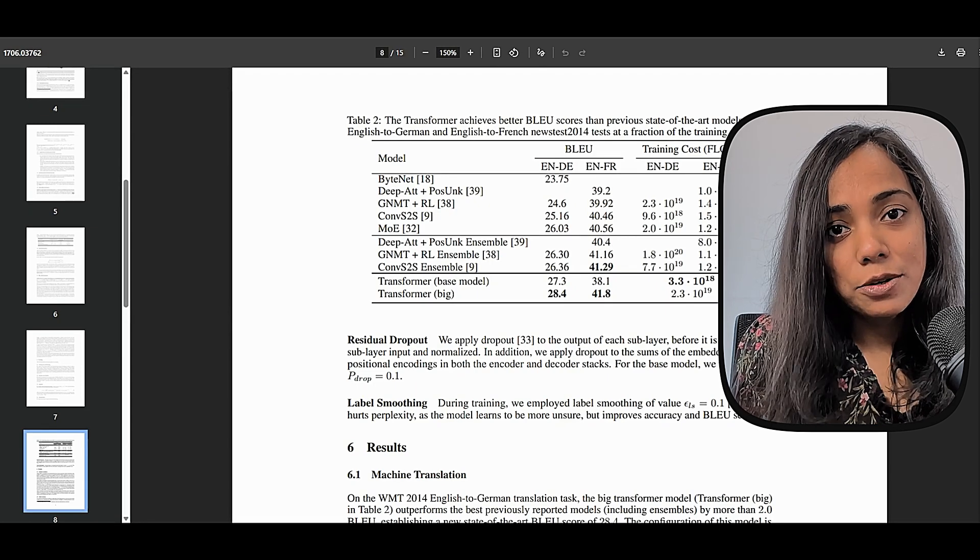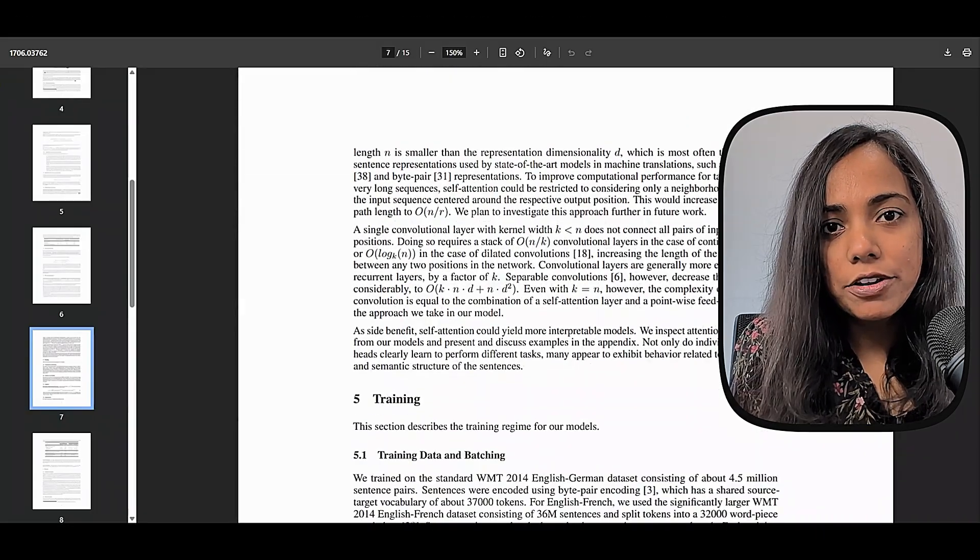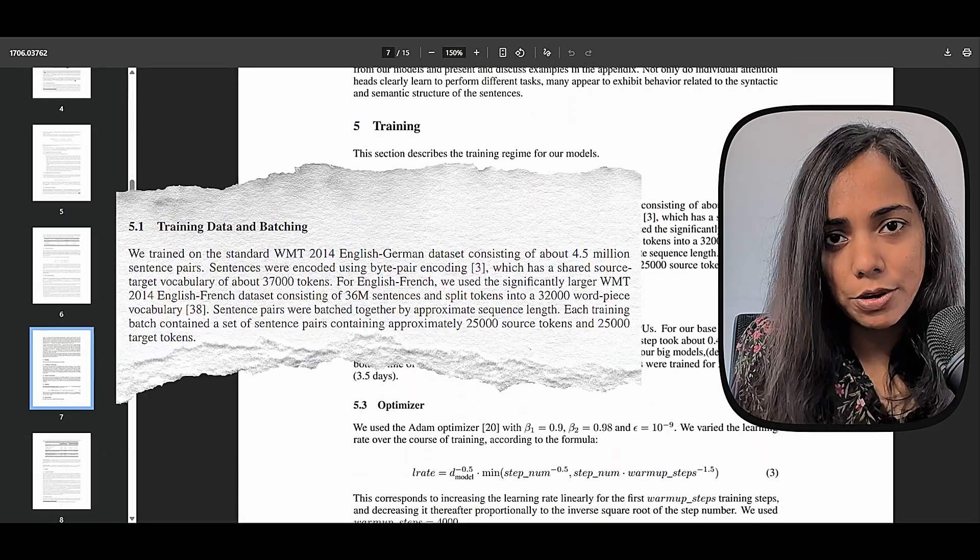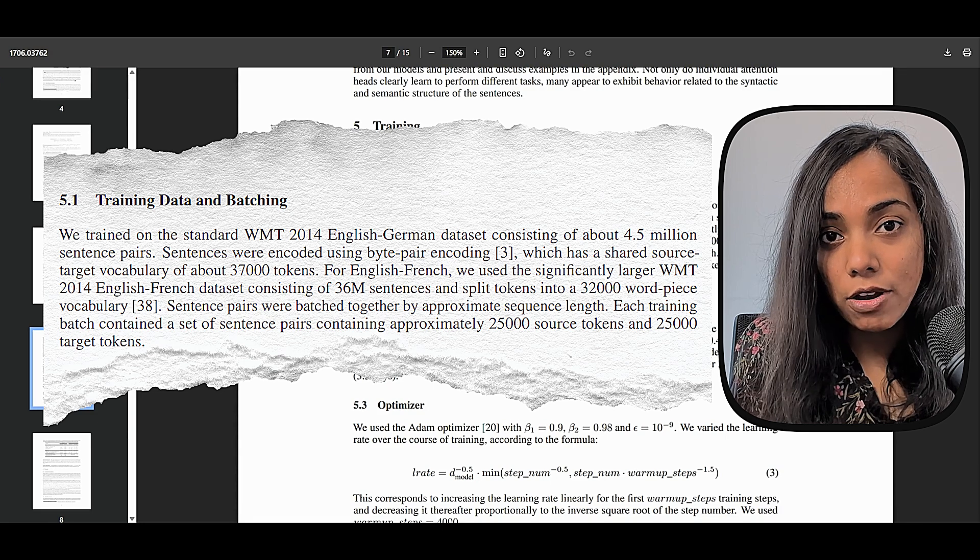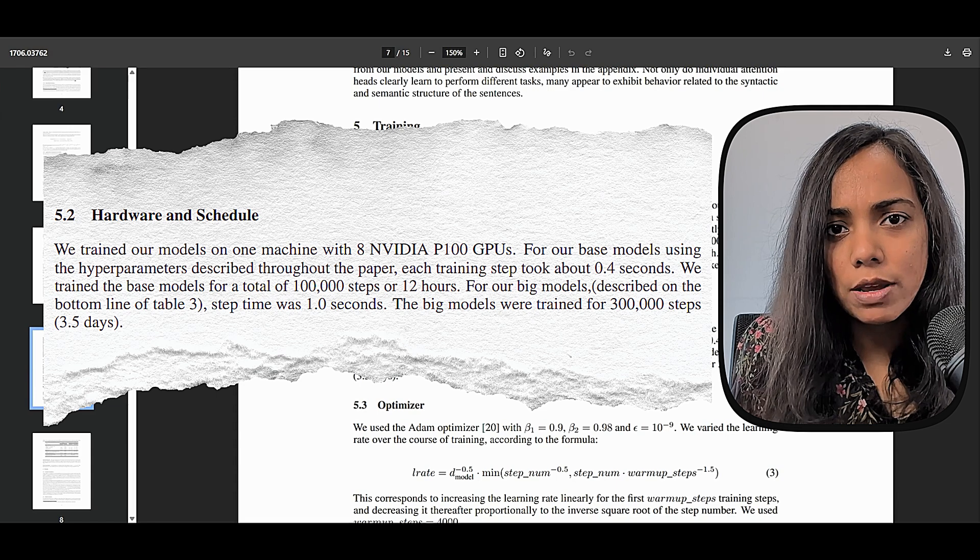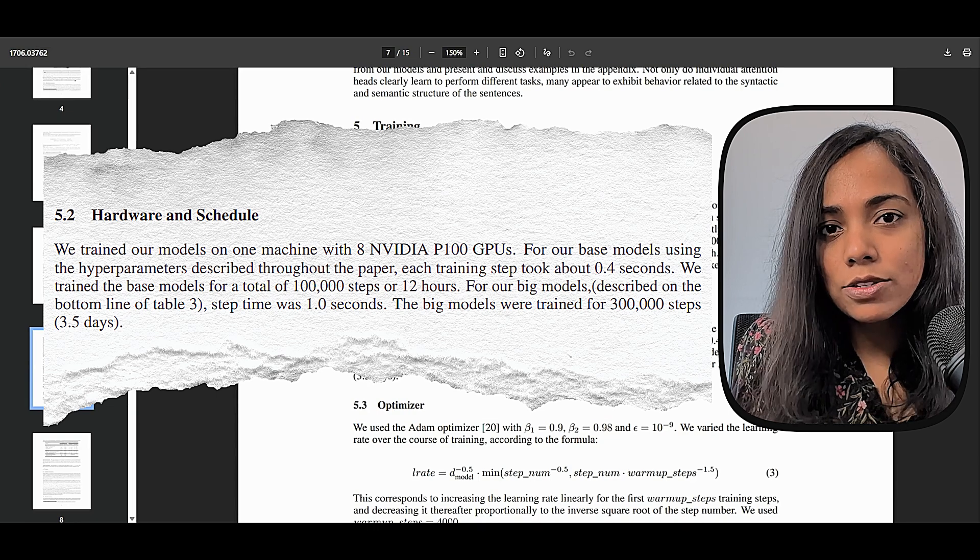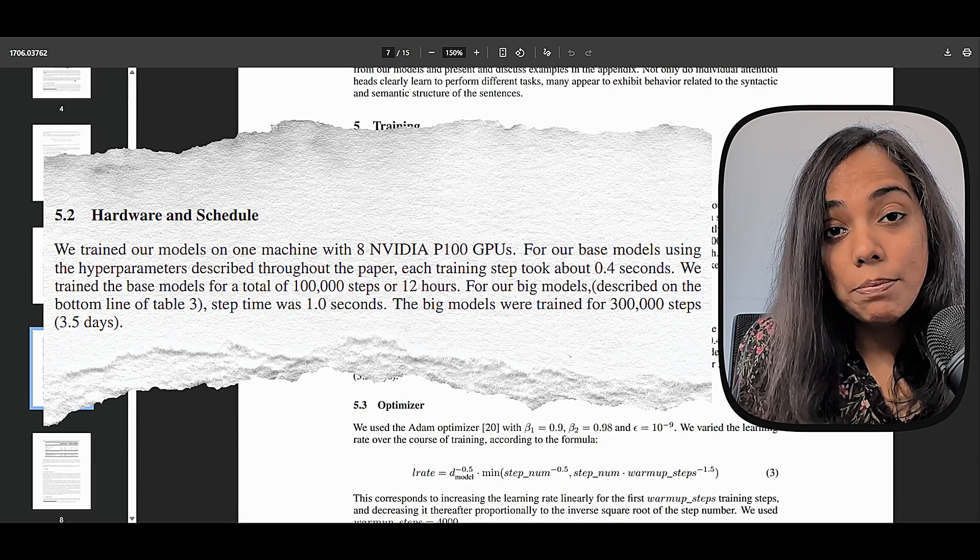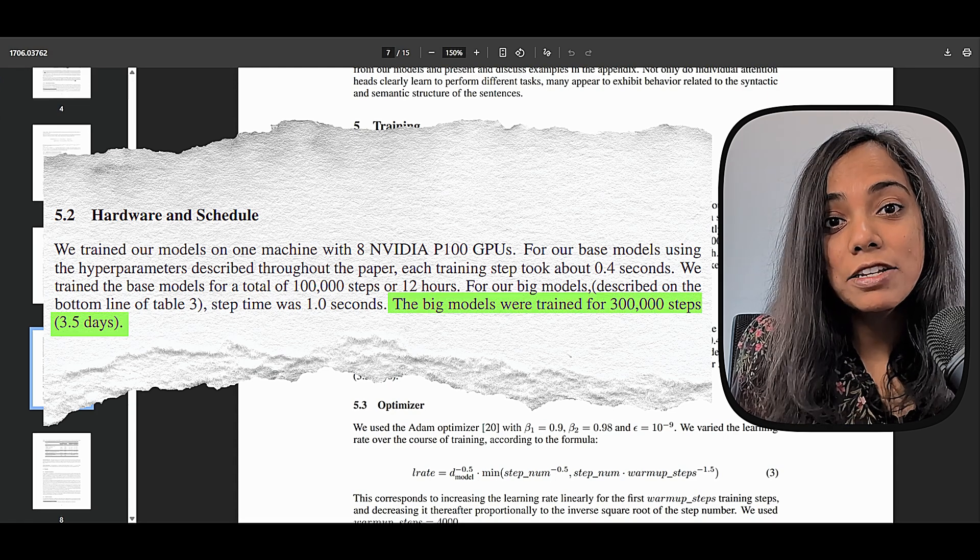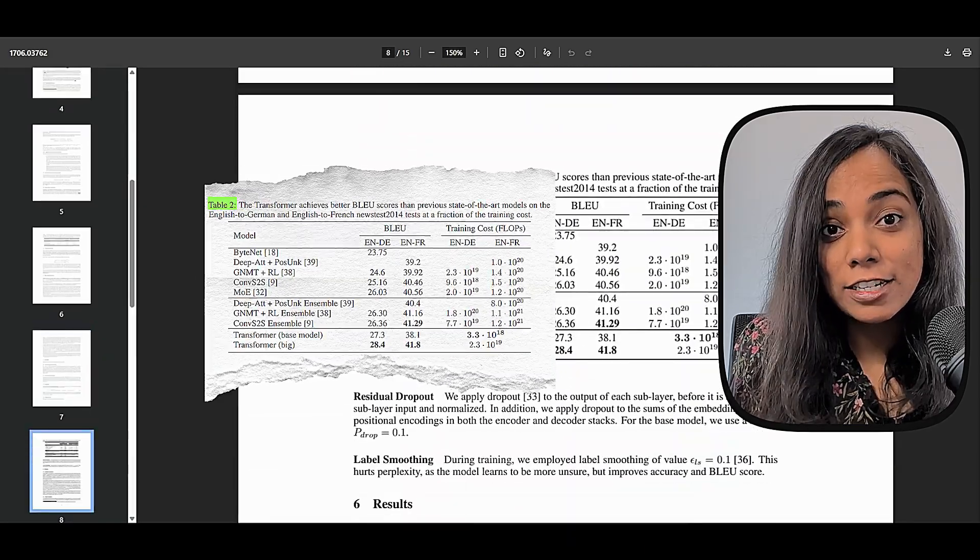It turns out that they used many large, big machine translation data sets. The vocabulary was subword units, which resulted in about 30,000 to 40,000 tokens in the vocabulary. And they trained the model using a machine with eight NVIDIA GPUs. And the base model took about 0.4 seconds for one step, and they trained for about 100,000 steps. So that's roughly 12 hours, which is quite small. The bigger model that they trained took about three to four days, which is still a great improvement over previous methods.